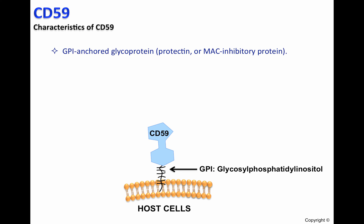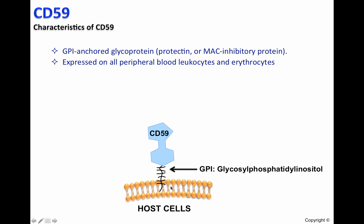CD59 is a GPI-anchored glycoprotein, also called protectin or MAC-inhibitory protein. The GPI, or glycosylphosphatidylinositol, will keep CD59 attached to the cell surface of host cells.